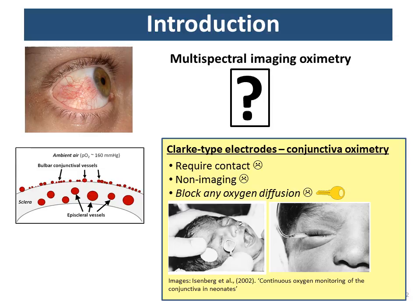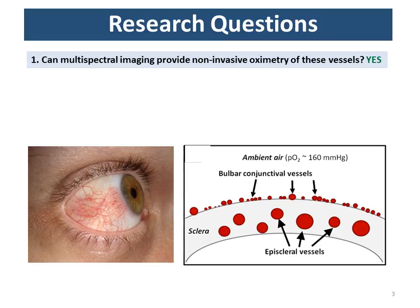They also have a temperature-dependent calibration requirement. And crucially, if you're looking at vessels where oxygen diffusion may play a role, these electrodes actually block any oxygen diffusion effects. Here are images from a 2002 study where these are being used to monitor arterial oxygen saturation in a baby — it doesn't look like it's having a good time.